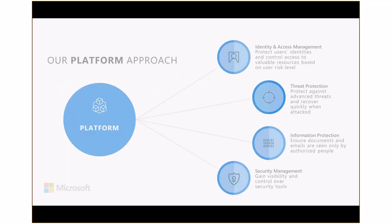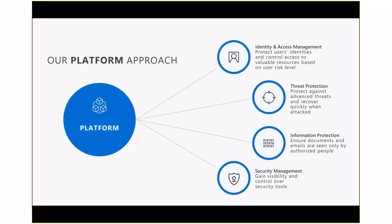As we discussed last time, there are four security areas that basically comprise the end-to-end security story at Microsoft. These areas are identity and access management, threat protection, information protection, and intelligence security management. In our previous session we went into a lot of depth on identity and access management and information protection, and in this session we're going to be focusing on threat protection and intelligence security management. We'll start with threat protection first.